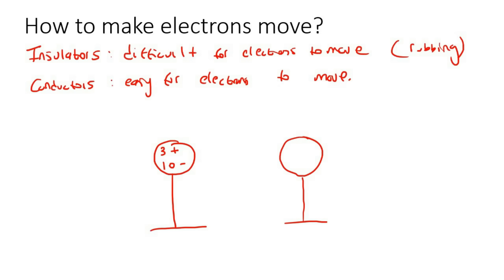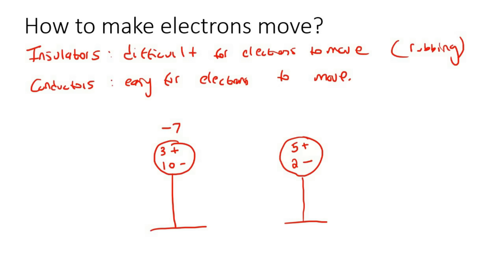These balls contain loads of atoms with protons and electrons. Let's say ball A has three protons and ten electrons, and ball B has five protons and two electrons. The overall charge of A is three minus ten, which is negative seven. The overall charge of B is five minus two, which is positive three.